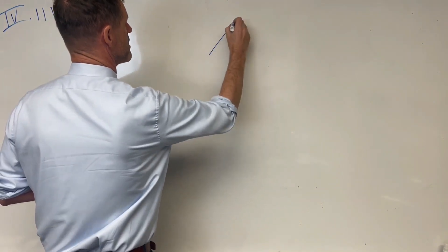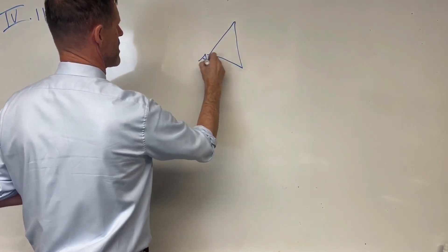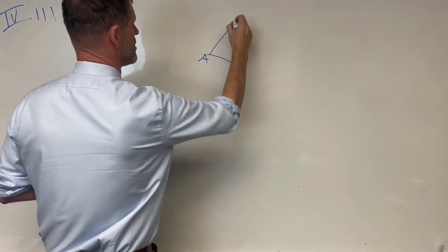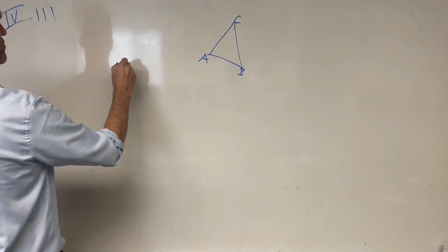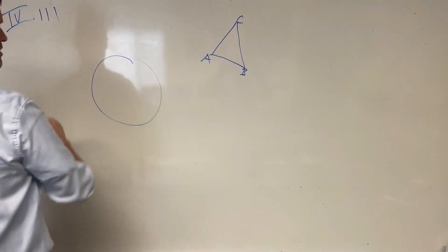We've got a given triangle here, call that A, B, C, and we have our given circle right here.